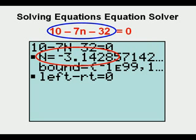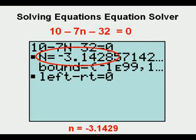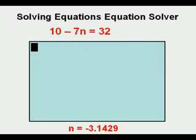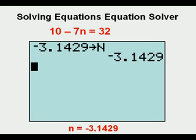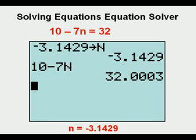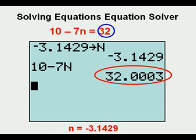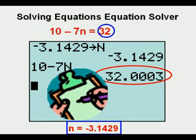We get, as our answer, a negative irrational number — it looks like it's close to pi. Let's write it down to four significant figures to use it to check. We re-enter the original equation and get to the home screen by pressing the second key, then quit. We store negative 3.1429 to n and press enter. Entering the left side of the equation gives 32 equals 32, verifying that n equals negative 3.1429. Check.